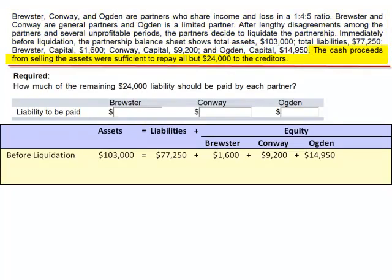The cash proceeds from selling the assets were sufficient to repay all but $24,000 to the creditors. This means after liquidation, the liabilities of $77,250 cannot be fully satisfied. The amount of cash is $24,000 less than our liabilities. So $77,250 minus $24,000 means we have cash of $53,250. The amount of the loss is the difference between $103,000 and $53,250 — the asset base was eroded by $49,750.